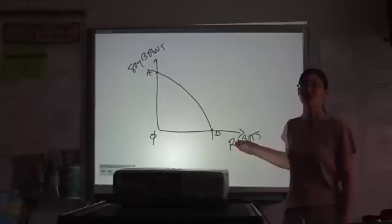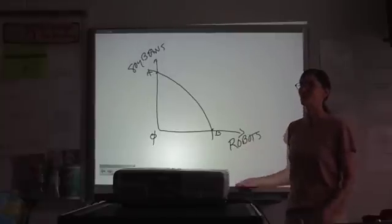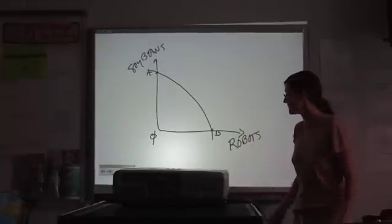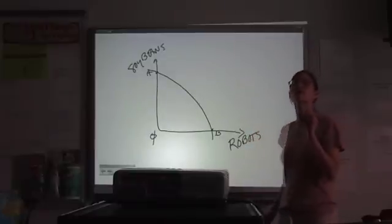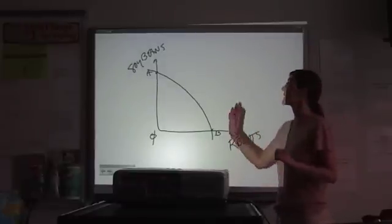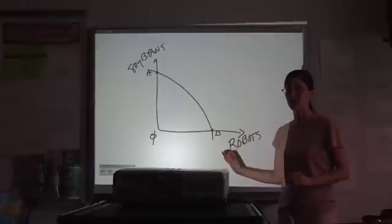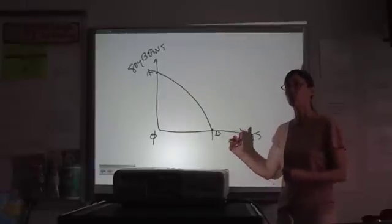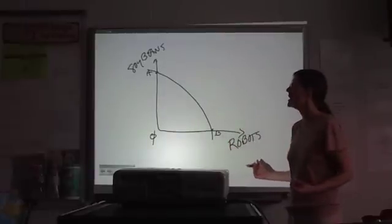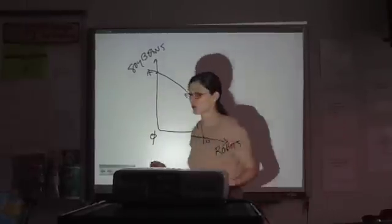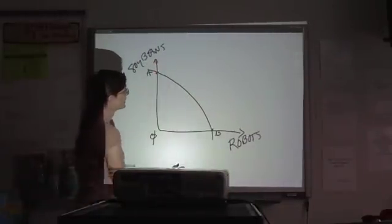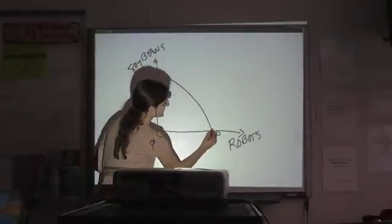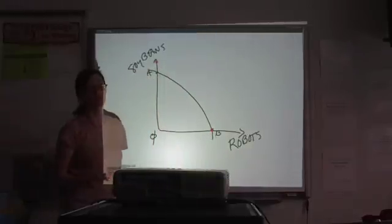Those resources are not transferable to robots because, again, we don't grow robots in the ground using fertilizer. So, what's going to happen if we have a technological change that affects one good but not the other, making it more efficient? Then we will increase our potential production of one product without increasing the potential production of the other.